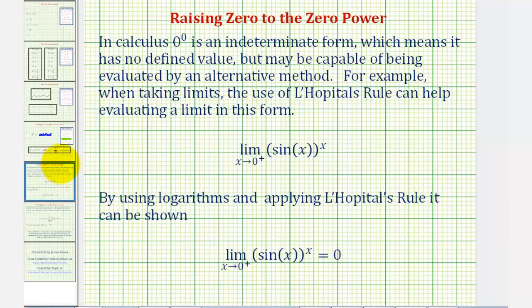For example, in calculus, zero to the power of zero is an indeterminate form, which means it has no defined value but may be capable of being evaluated by an alternative method. For example, when taking limits in calculus, the use of L'Hopital's rule can help evaluate a limit in the form of zero to the power of zero.